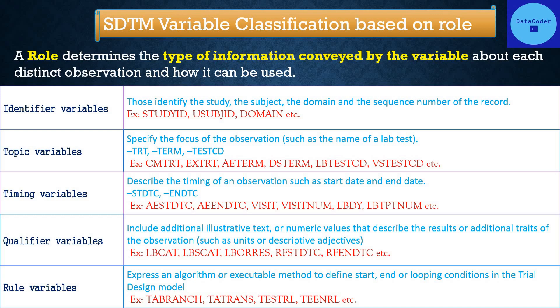Identifier variables identify the study, the subject, the domain, and the sequence number of the record. Examples are STUDYID, USUBJID, and DOMAIN.